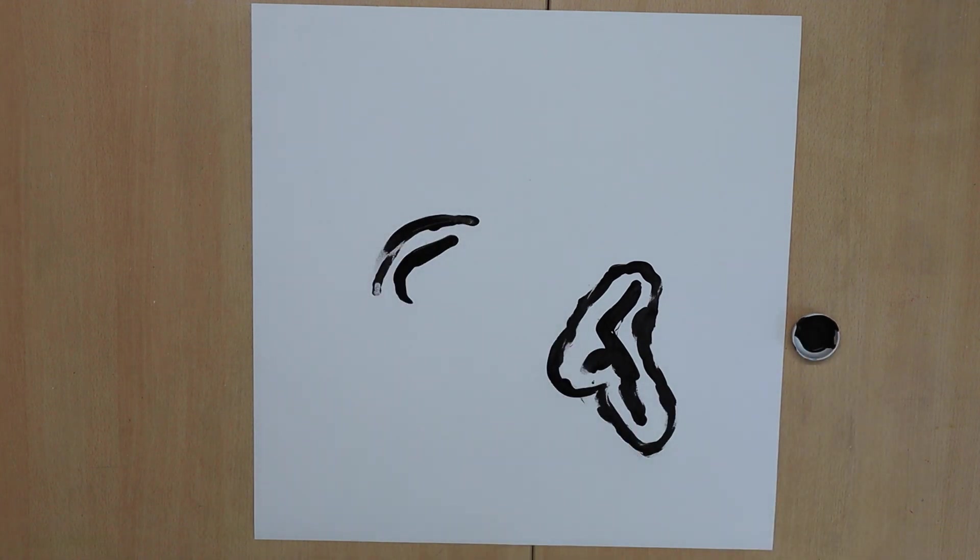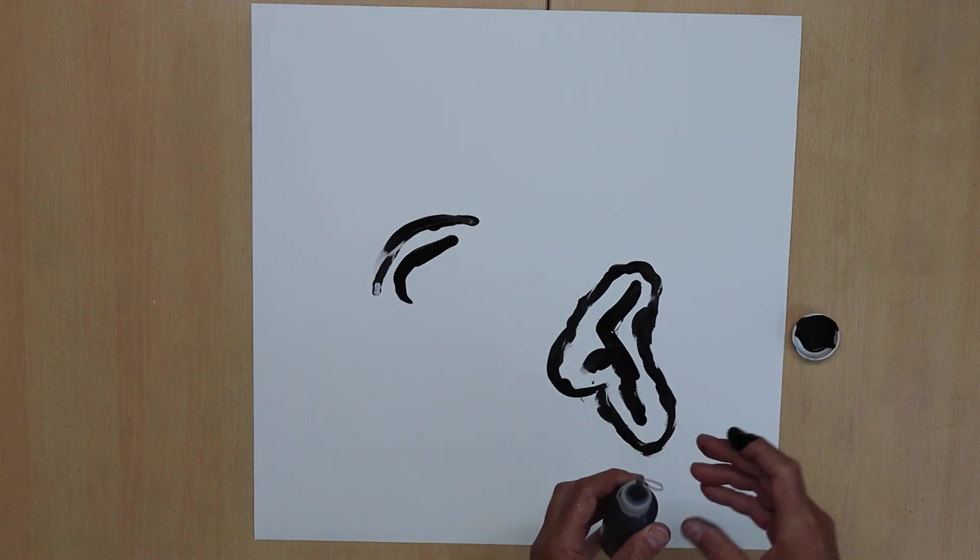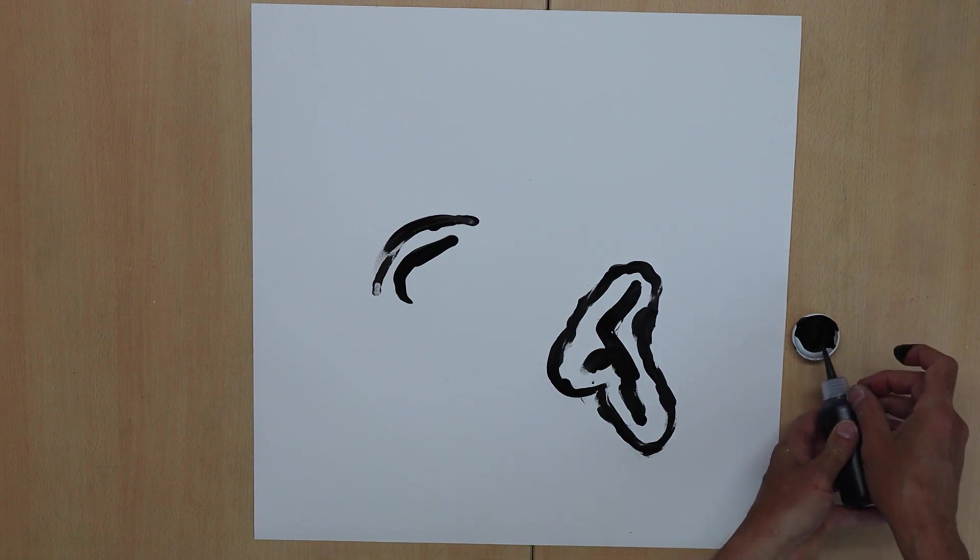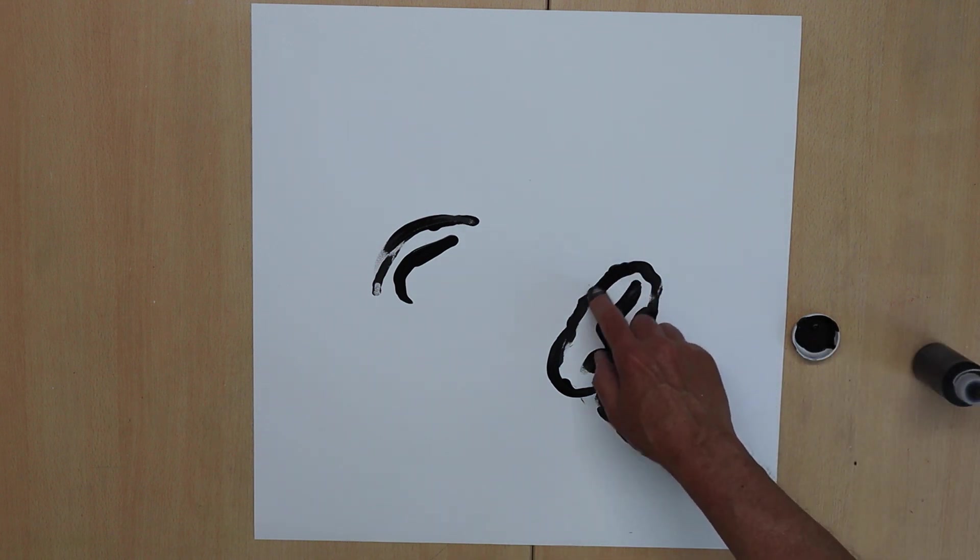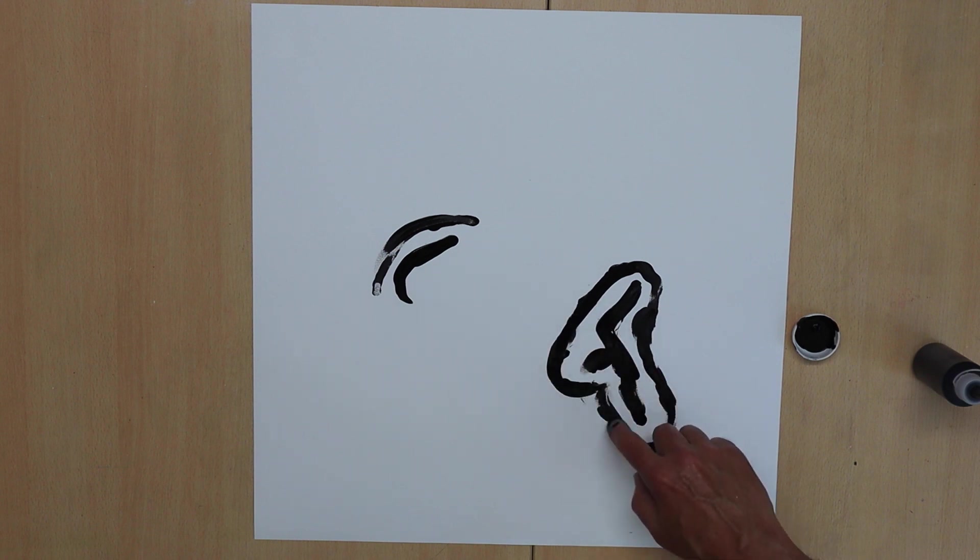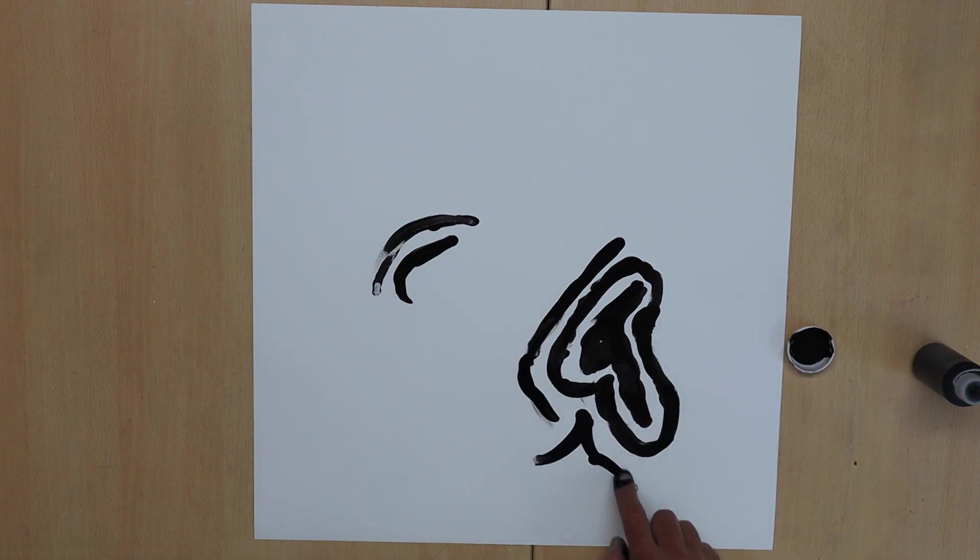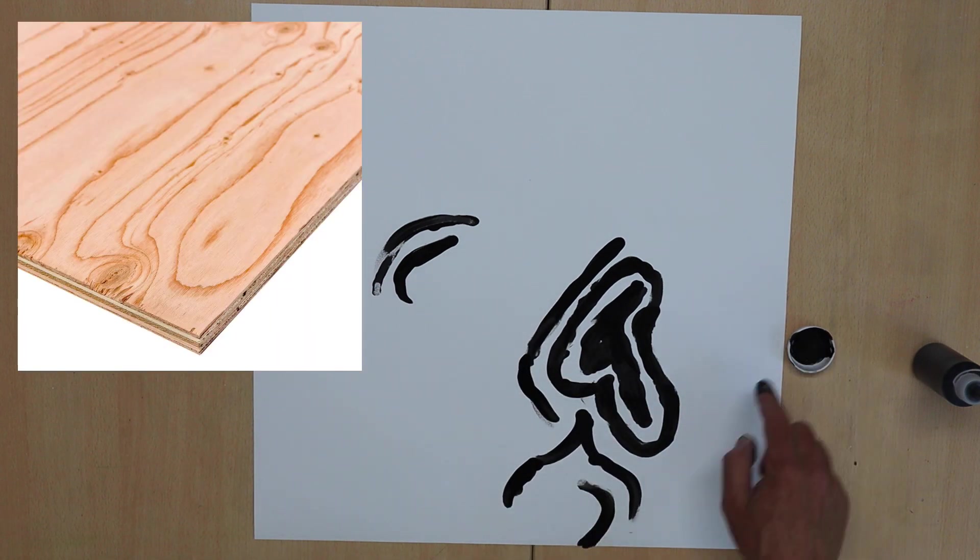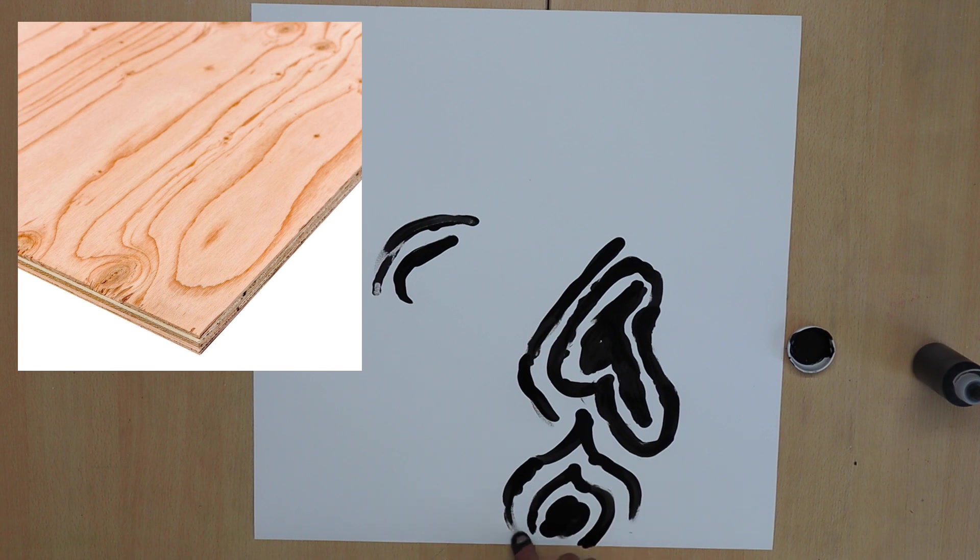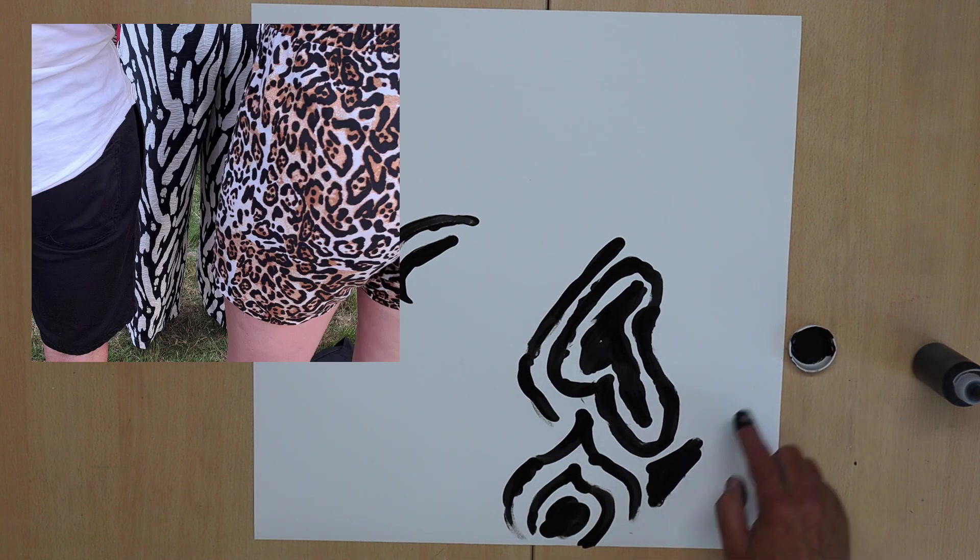So I add some Ecoline liquid watercolour to the bowl. This helps. Now I can focus on creating a pattern.